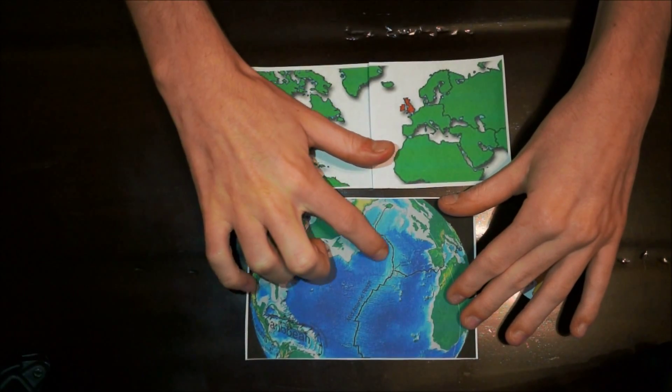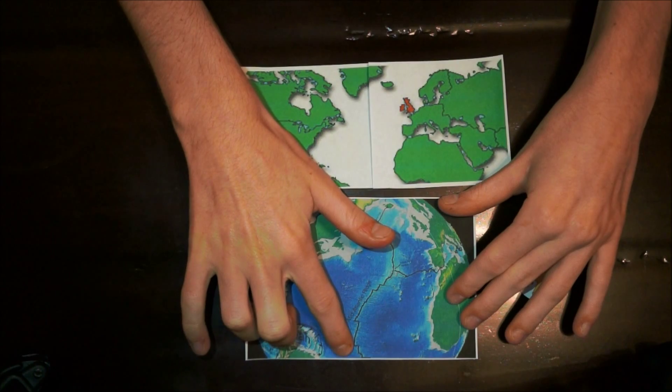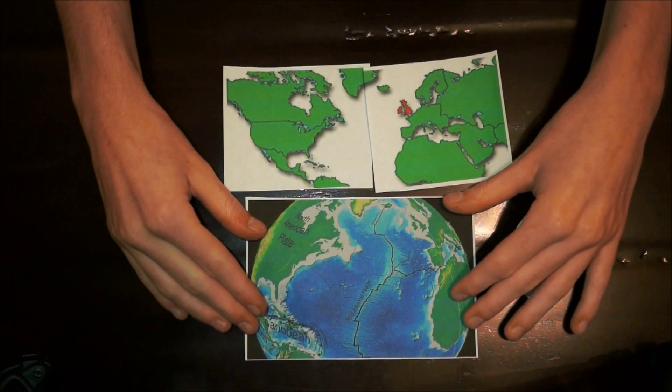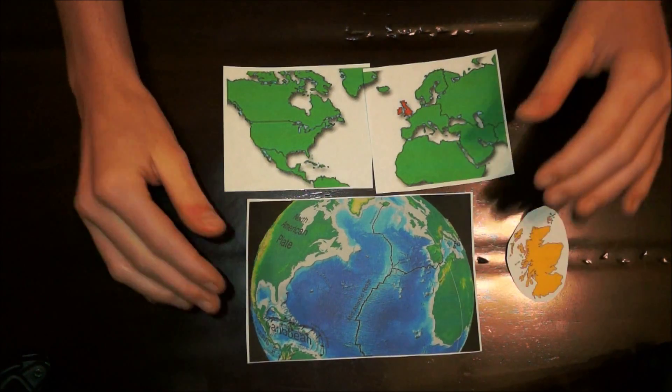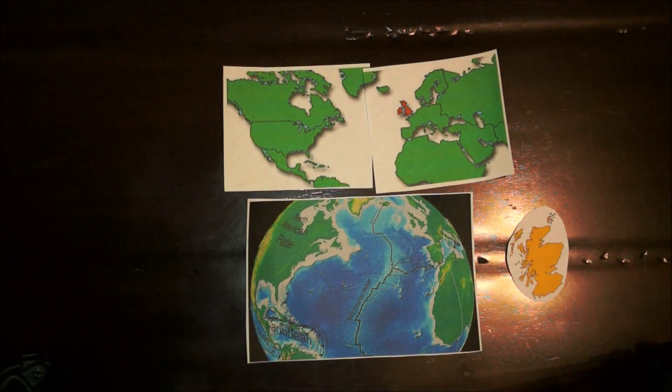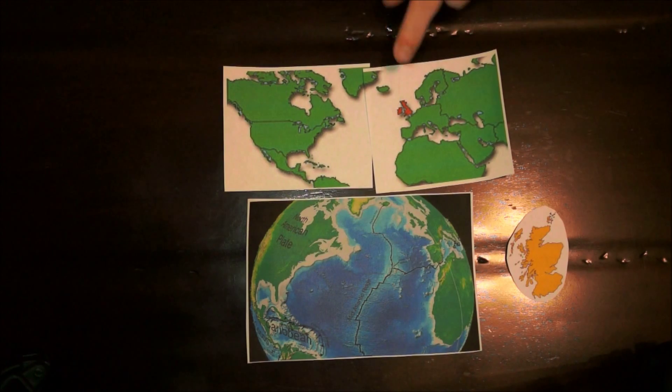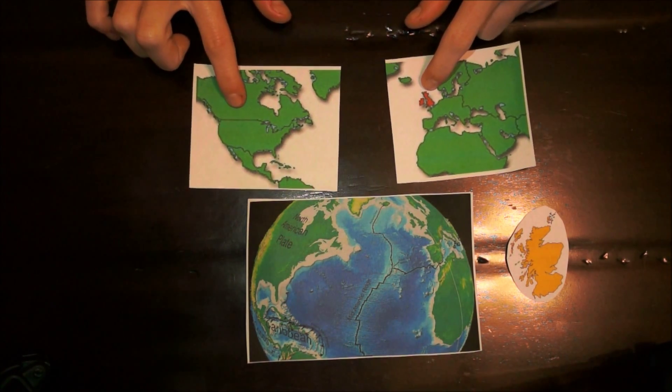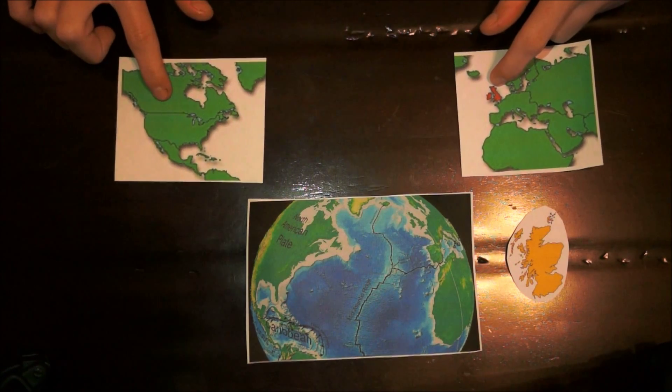The Mid-Atlantic Ridge, which is indicated by this black line here, is a divergent boundary created by the Eurasian Plate and the North American Plate. It's always forming new rocks along the bottom of the Atlantic Ocean, which is causing Scotland and North America to gradually drift further apart from one another over time.